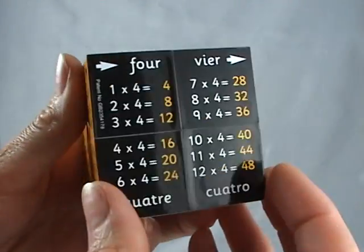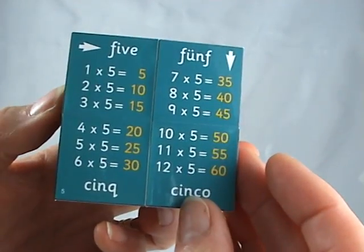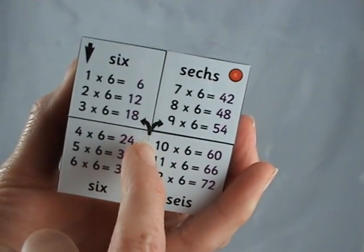The 4x table, the 5s, and down to the 6x table. At the double headed arrow, turn the cube inside out to find the green dot again.